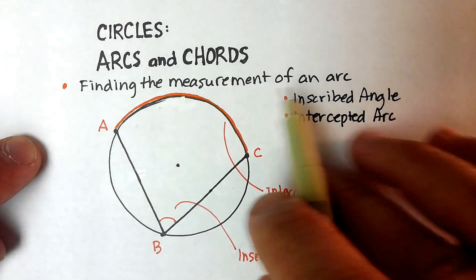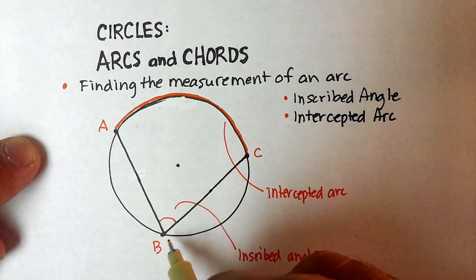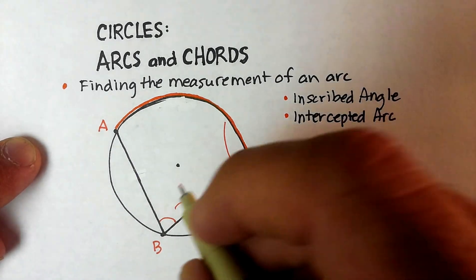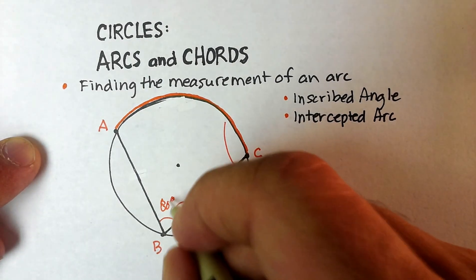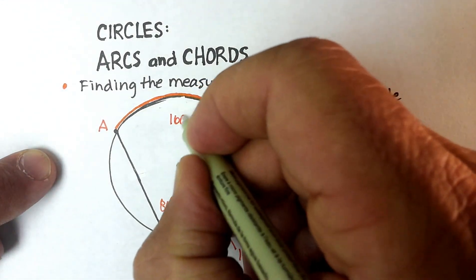Now the measurement of this arc can be found by doubling the actual angle itself. So let's assume that this angle were at 80 degrees. That means that this arc is 160.